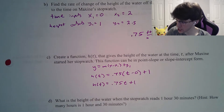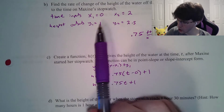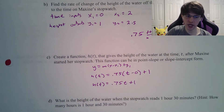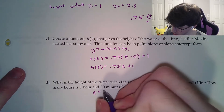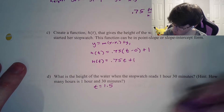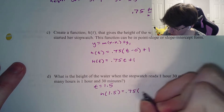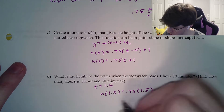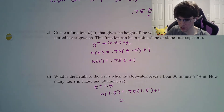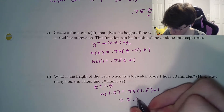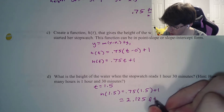What is the height of the water when the stopwatch reads 1 hour and 30 minutes? Remember this is all in hours, so 1 hour 30 minutes is 1.5 hours. Our h of 1.5 is 0.75 times 1.5 plus 1, which looks like 2.125 feet.